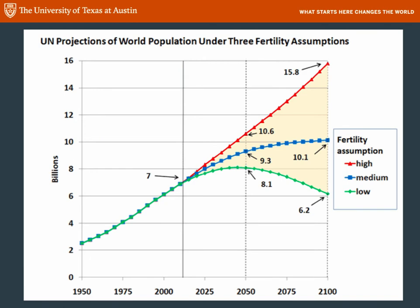The United Nations Population Bureau reports on world population every year and makes projections into the future. This is the latest projection looking at three possible scenarios based on fertility rate. Assuming a high fertility rate, population on Earth could reach 15.8 billion by 2100. At a low fertility rate, it would peak just over 8 billion and drop down. At a medium fertility rate, it would peak around 10 billion by 2100. People think the carrying capacity of Earth is somewhere between 10 and 14 billion — that's where most estimates fall.